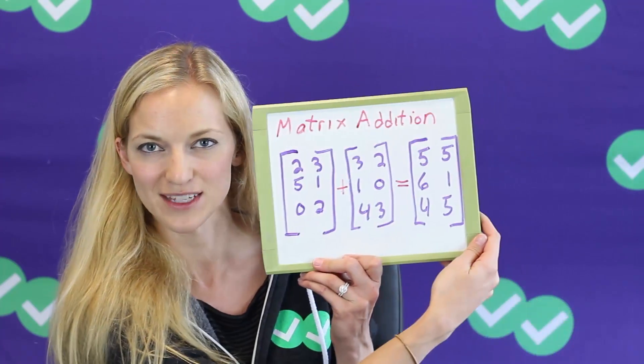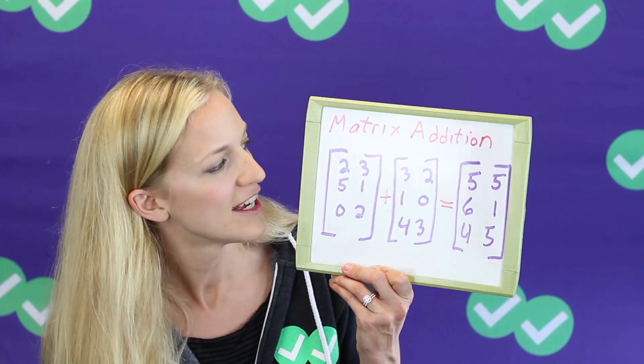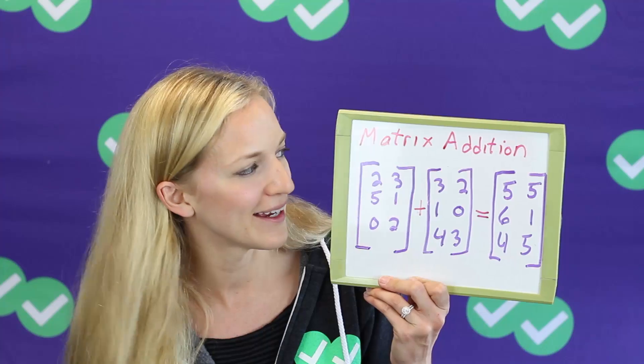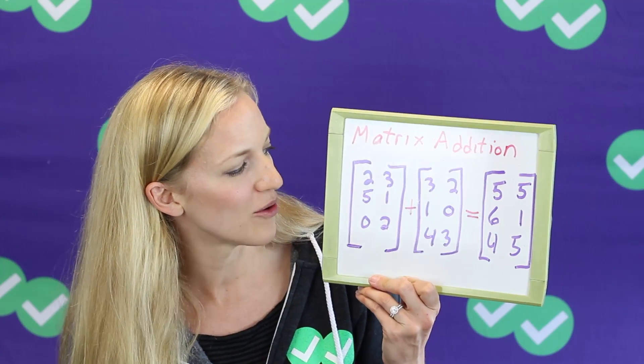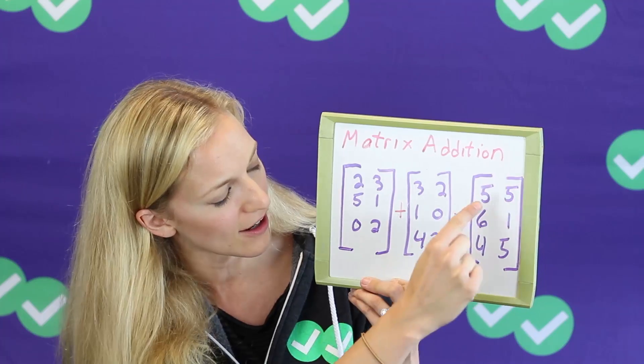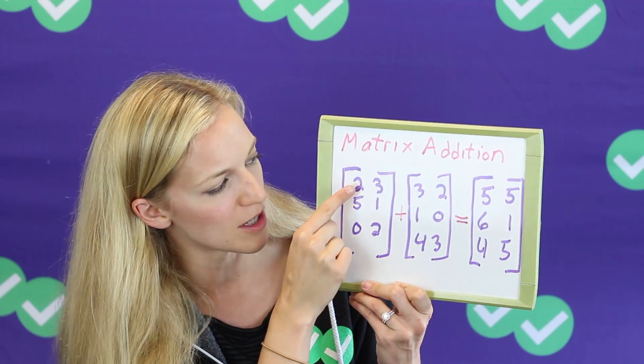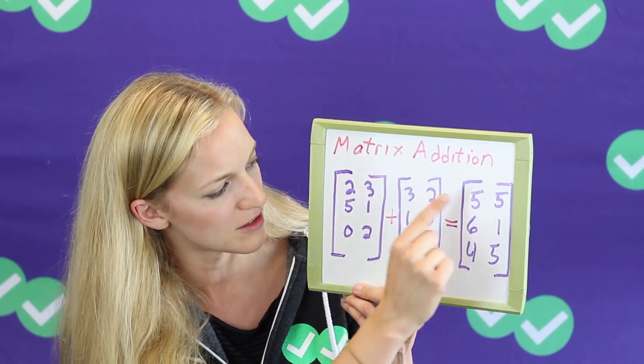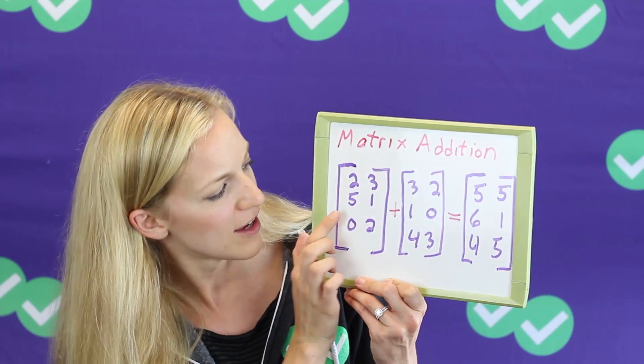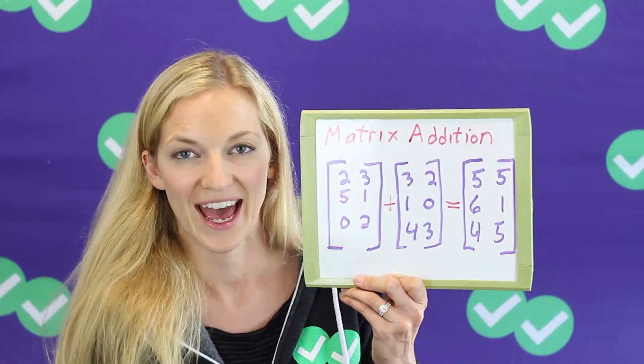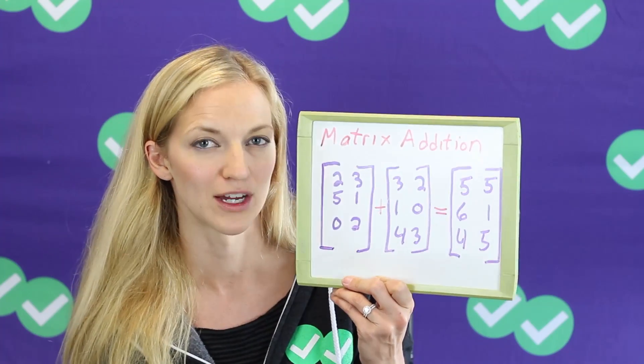Let's look at matrix addition. This is something else you might be asked to do on the ACT. Also pretty straightforward. When we're adding matrices, we're just going to add the corresponding numbers to get our results. So we're going to look at whatever the first number is in the first row, first column. Two and three gives us five, three and two gives us five, five and one gives us six, one and zero gives us one, etc. So we're just adding the corresponding pairs of numbers.